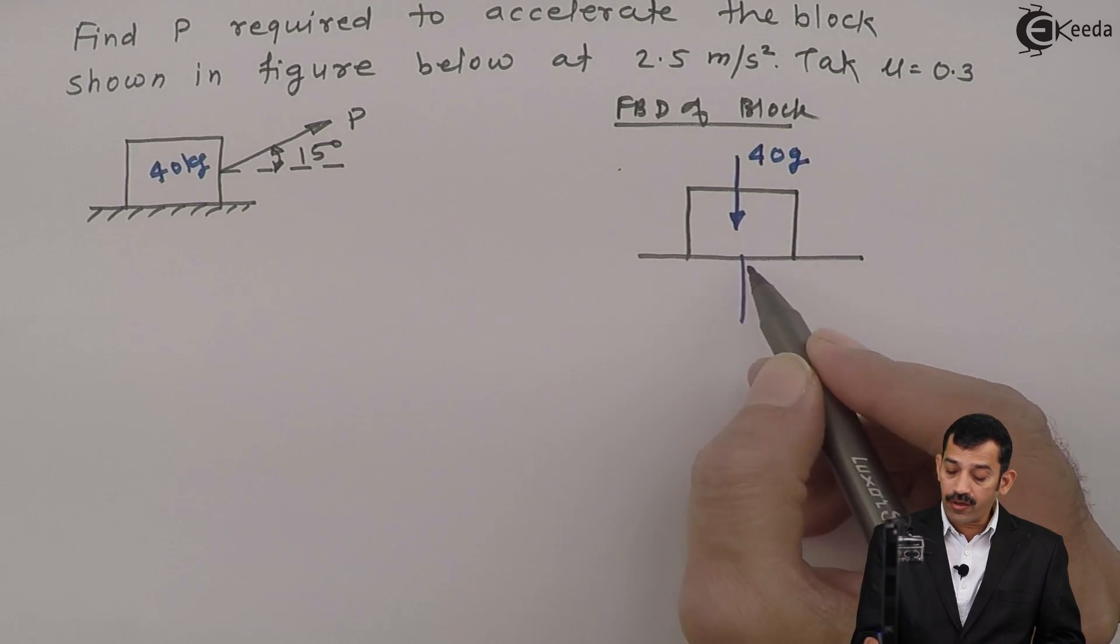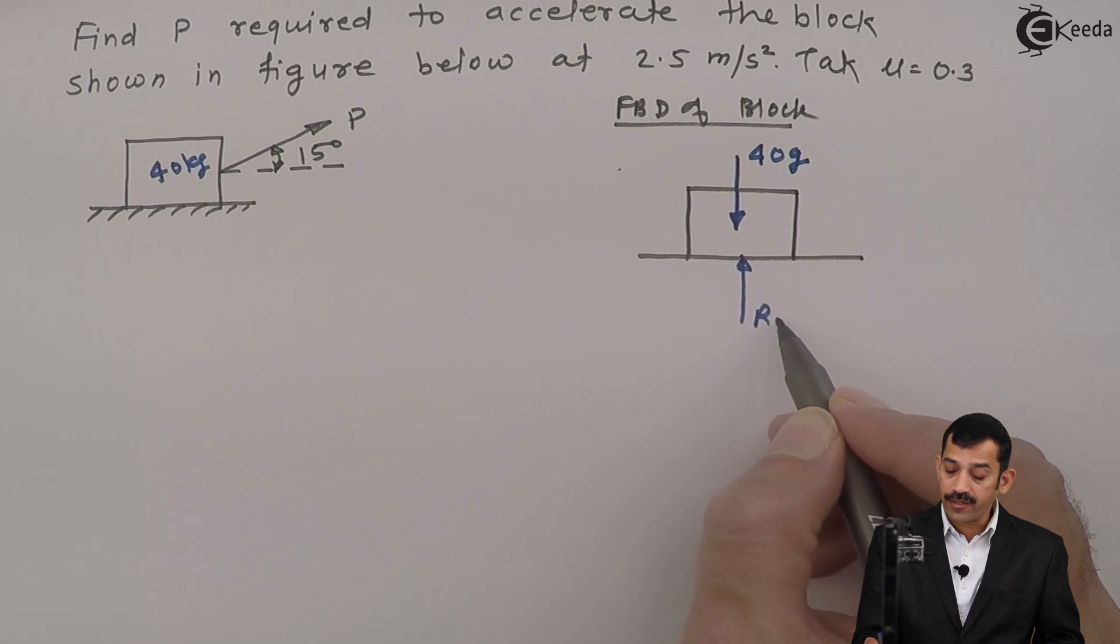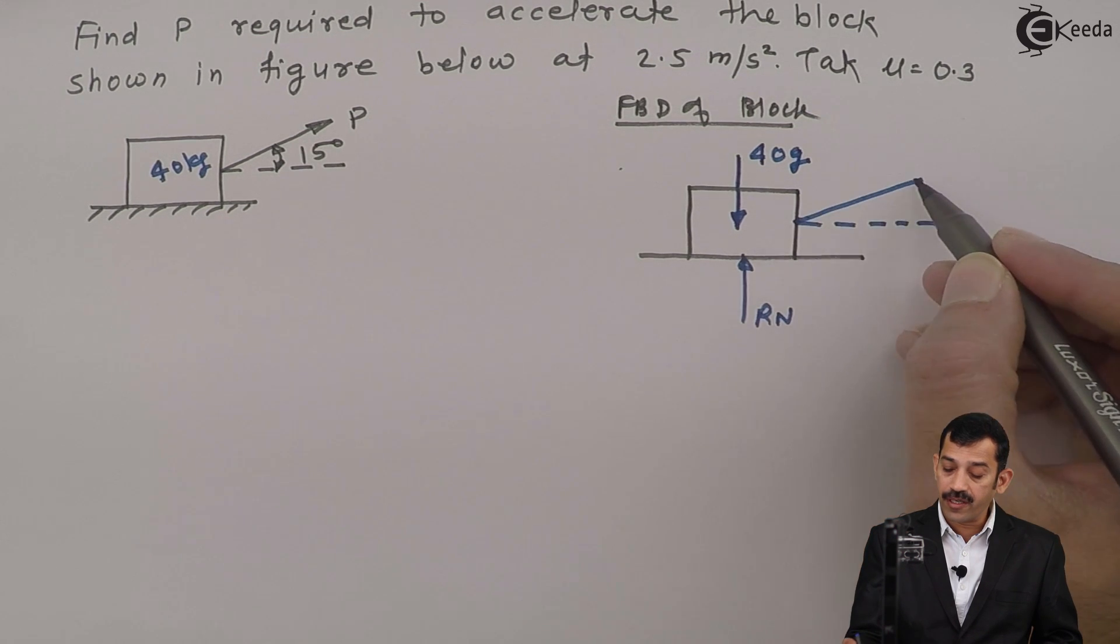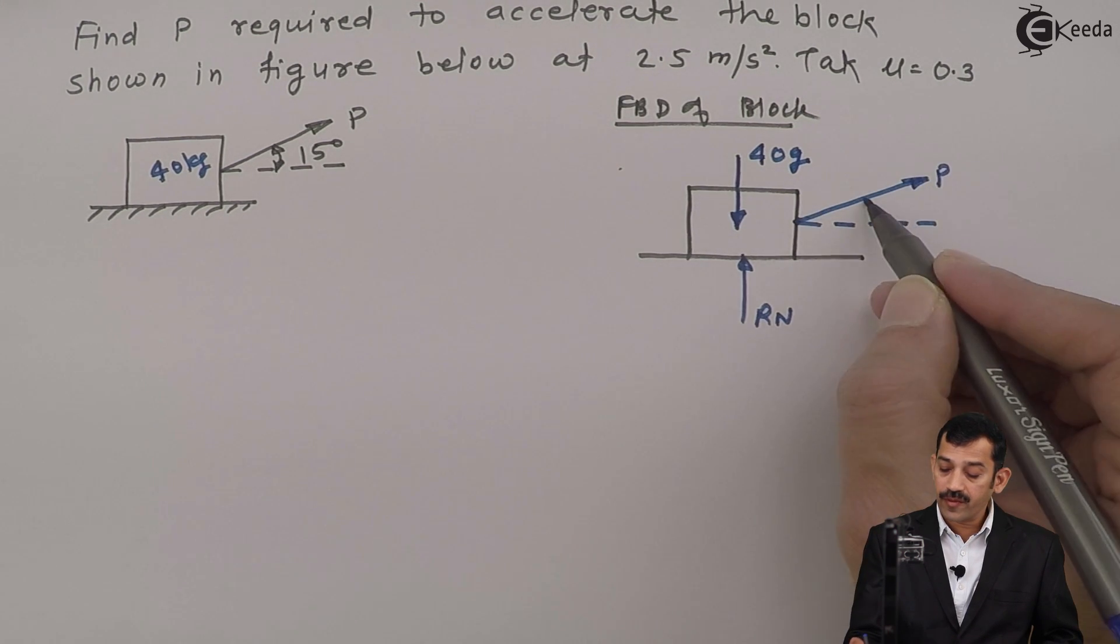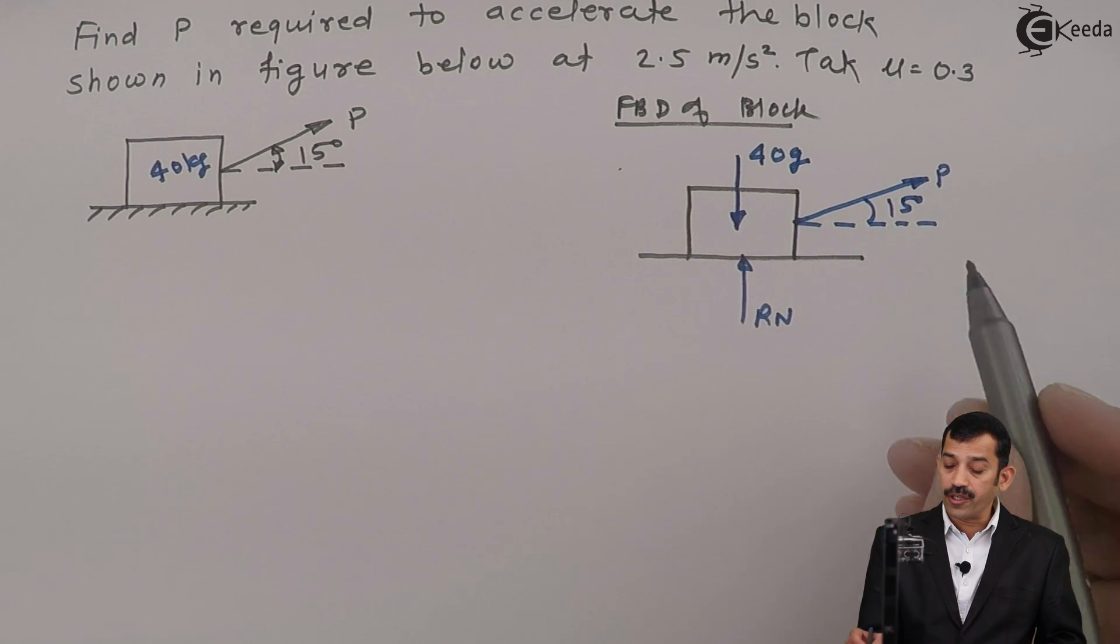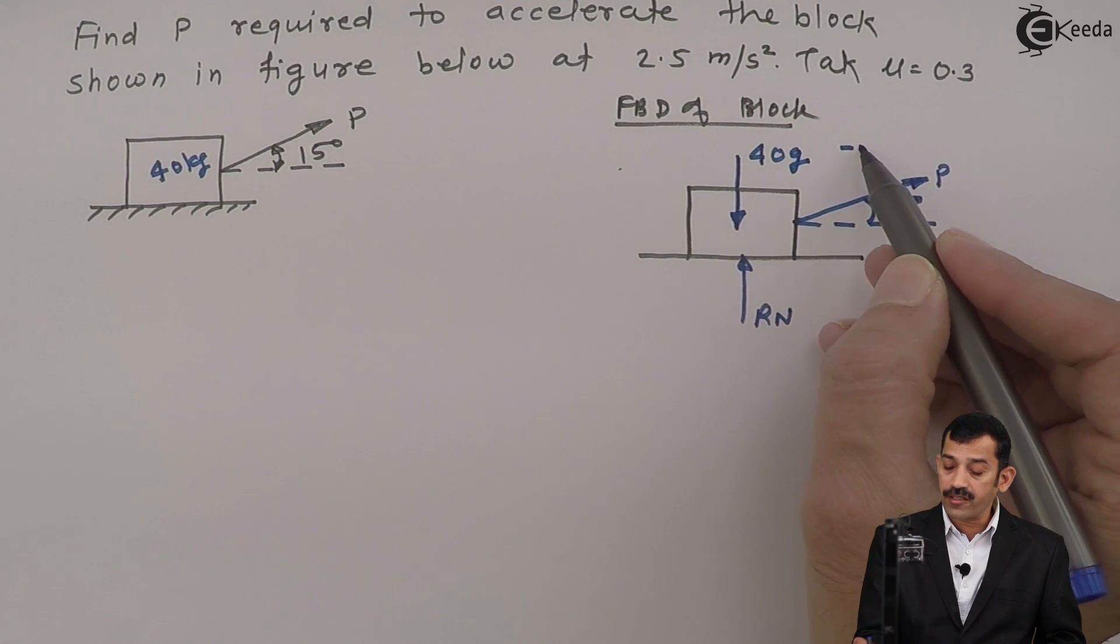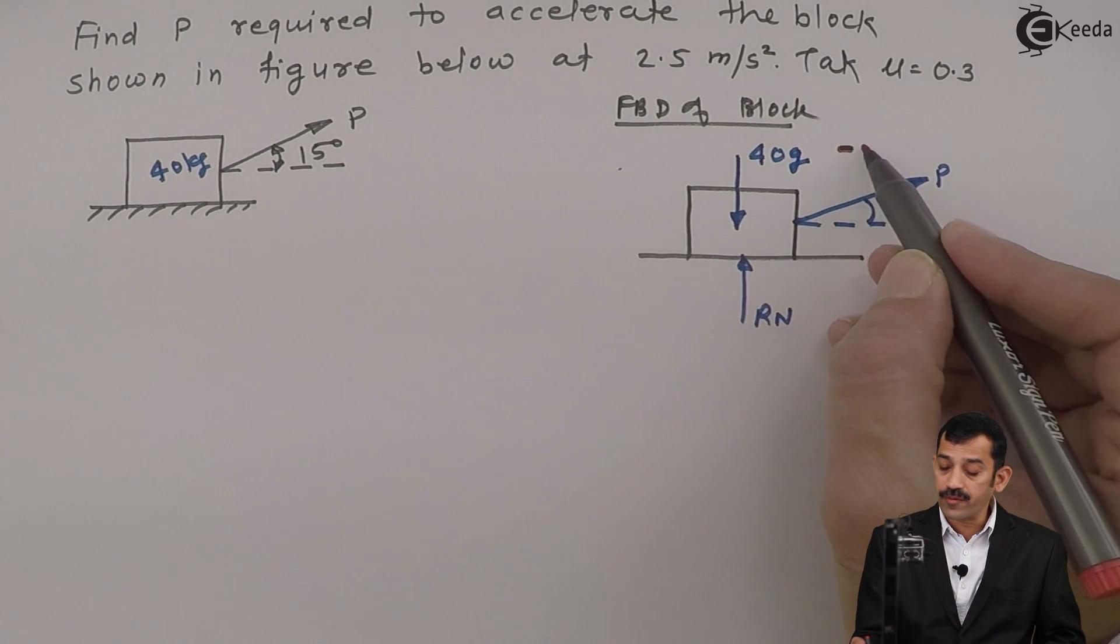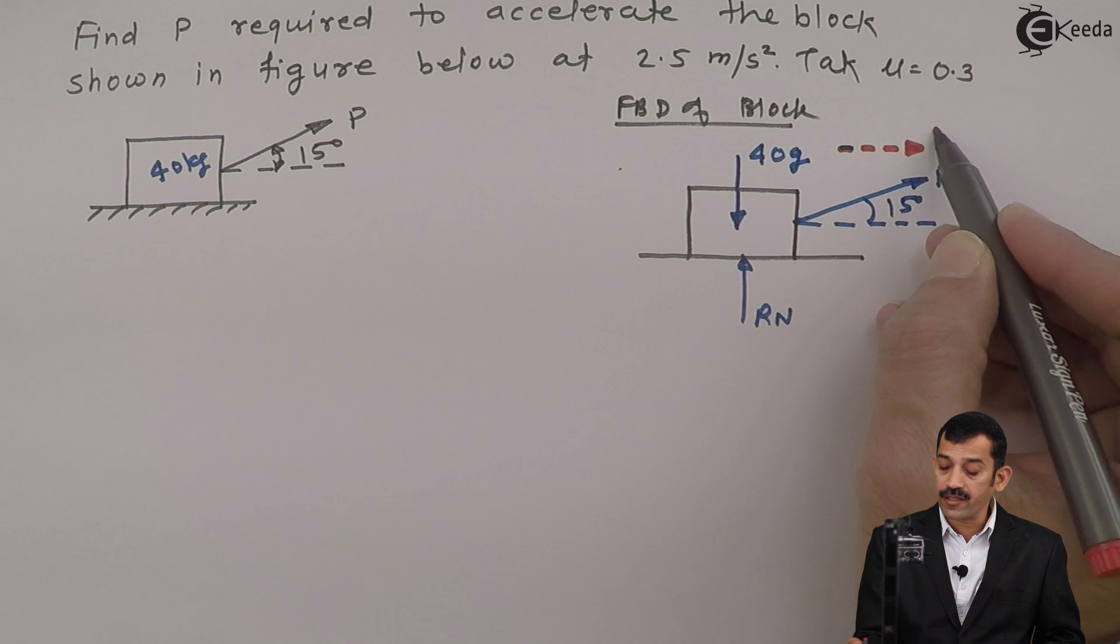We will get the normal reaction in the upward direction. Force P is acting here inclined at an angle of 15 degrees with horizontal. Due to the component of force P, the block definitely accelerates in the rightward direction. This is the direction of acceleration A.